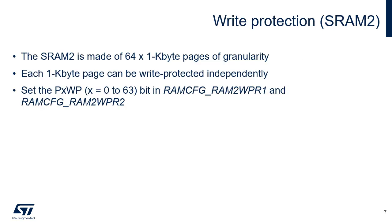The SRAM2 is made of 64 1 KB pages. Each 1 KB page can be write-protected by setting its corresponding PXWP bit in the RAMCFG memory write-protection registers 1 and 2. Two registers are necessary to form a bitmap of 64 bits. The consequence of attempting to write to a write-protected page is that the SRAM controller returns an error response to the AHB master. When this master is the Cortex-M33 CPU, this error causes a bus fault exception. When this master is a DMA channel, this error is interpreted as a DMA transfer error.